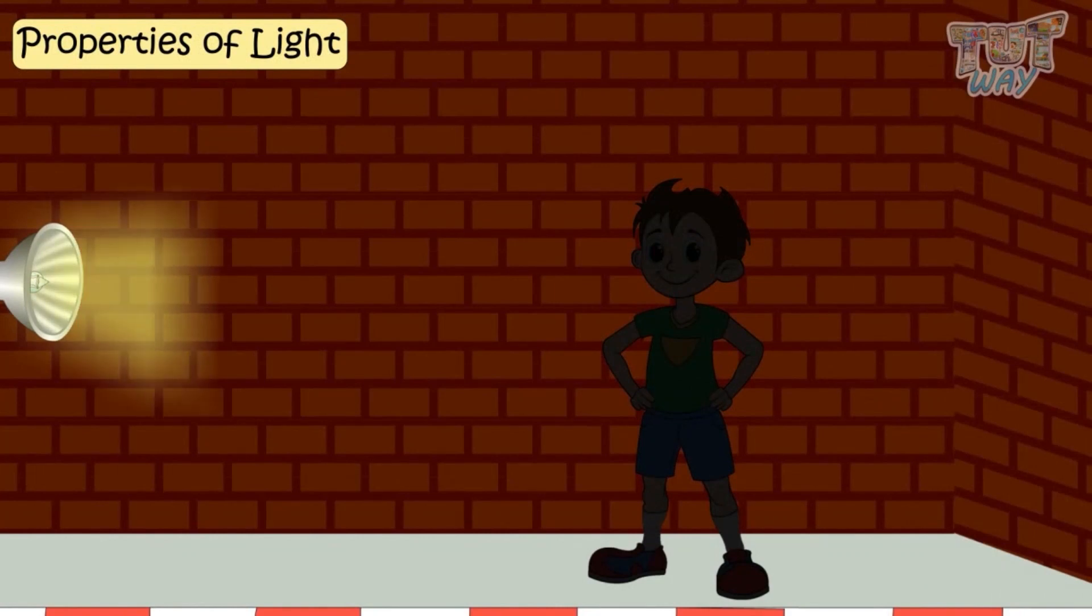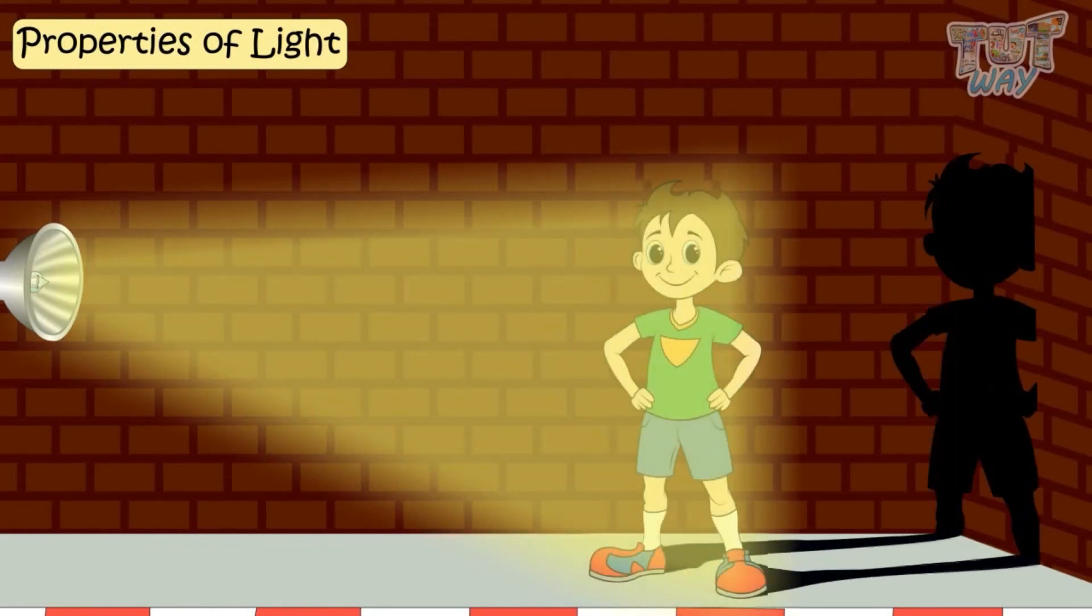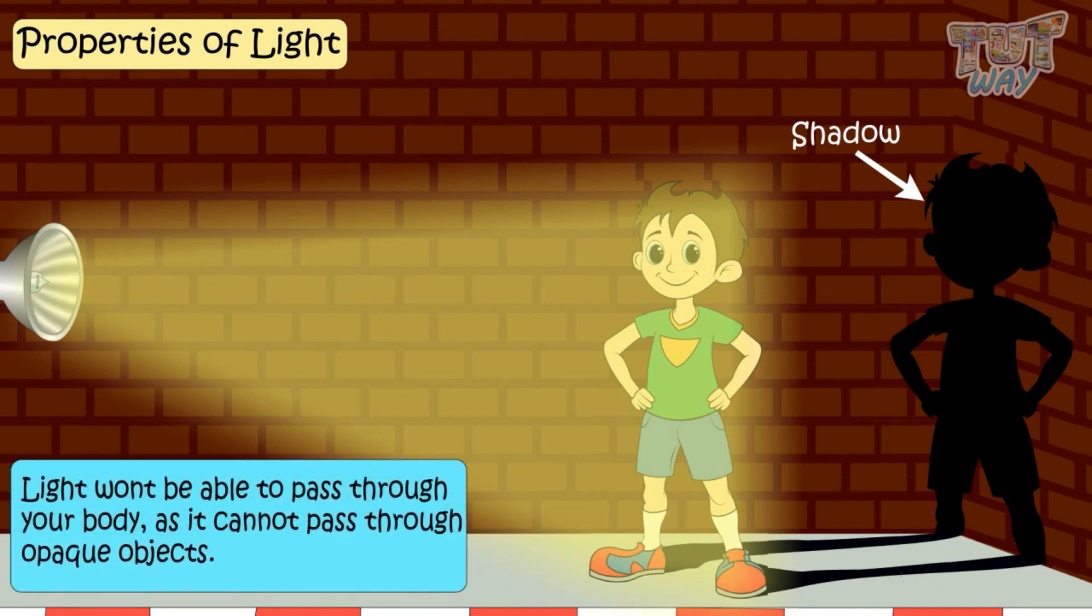Stand against some source of light. And as your body is opaque, that is, light cannot pass through it, so it will cast a shadow. That is, light won't be able to pass through your body as it cannot pass through any opaque object.